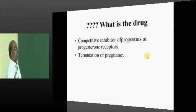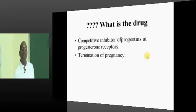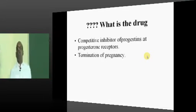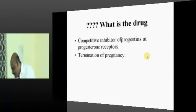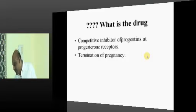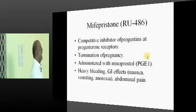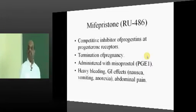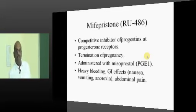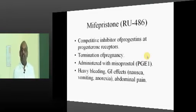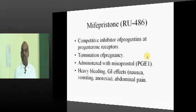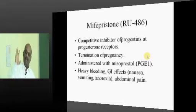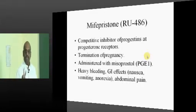Which is the competitive inhibitor of the progestins at the progesterone receptor level, so that you use the drug for termination of pregnancy? RU-486, mifepristone. Then what is misoprostol? It is the prostaglandin analog. After mifepristone acts, misoprostol pushes it out by contracting the uterus. So we give the combination of the two.